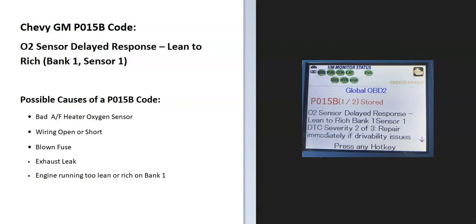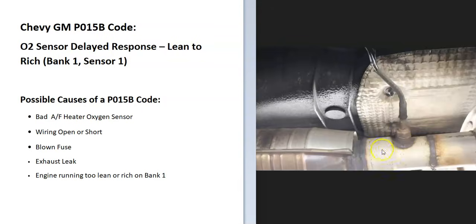Today I'm talking about a Chevy or GM vehicle that has a P015B code — what it is and how you go about fixing it. A P015B code is an O2 sensor delayed response lean to rich, bank one sensor one. There are sensors located on the exhaust and they do two things.